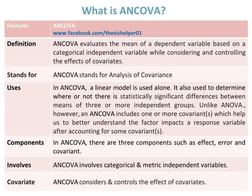In ANCOVA, a linear model is used. It is also used to determine whether or not there are statistically significant differences between the means of three or more independent groups. Unlike ANOVA, however, an ANCOVA includes one or more covariates, which help us to better understand the factor that impacts a response variable after accounting for those covariates.